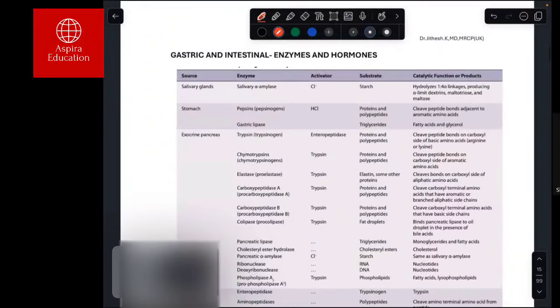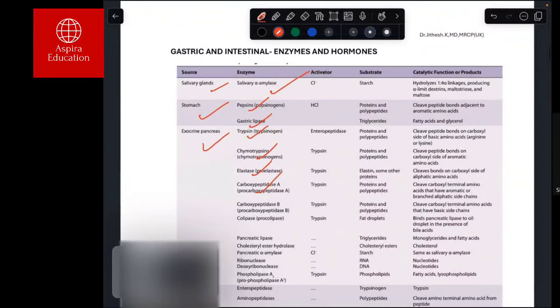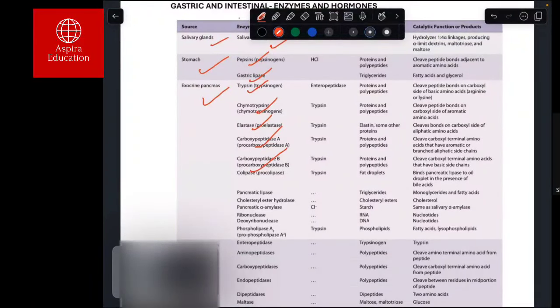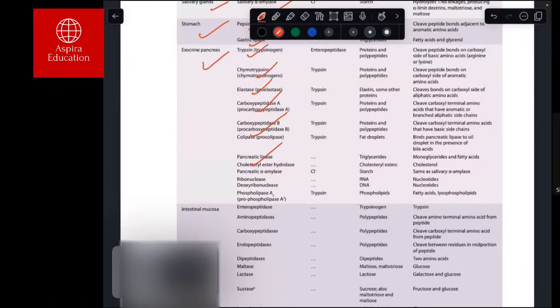These are the major intestinal enzymes and hormones. The salivary gland produces salivary amylase. The stomach produces pepsin and gastric lipase. The exocrine pancreas produces trypsin, chymotrypsin, elastase, carboxypeptidase A and B, and pancreatic lipase.